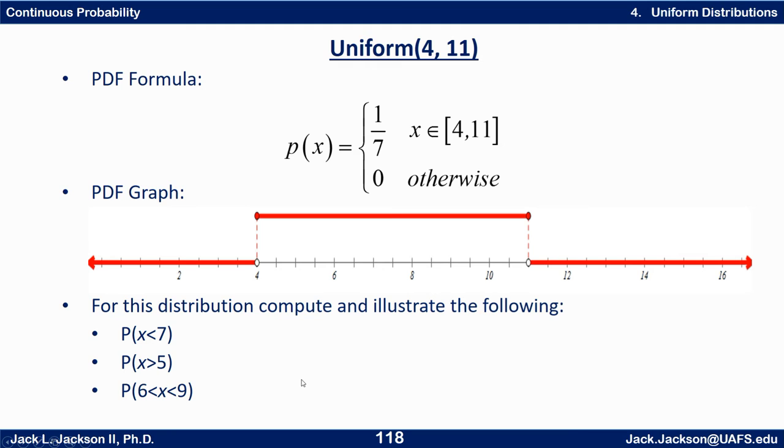So on this particular distribution, what I'd like you to do is solve these three problems. Find the probability that x is less than 7, that x is greater than 5, or that x is between 6 and 9, and then illustrate it on the PDF graph. Go ahead and work out these three problems and then come back when you're done.